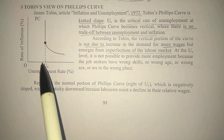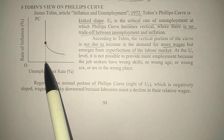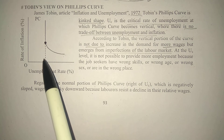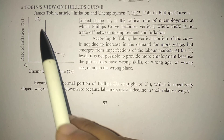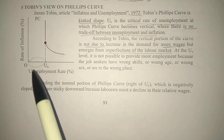What does reaching this point mean? Just as Friedman called it the natural rate of unemployment, Tobin named it the critical rate of unemployment. This level of unemployment will always remain. As we saw in the long-run Phillips curve and Friedman's theory, if we try to reduce it below this, there will be no benefit — on the contrary, inflation will occur.